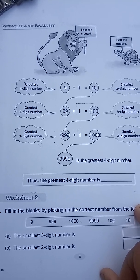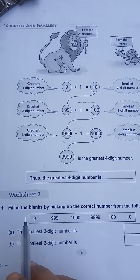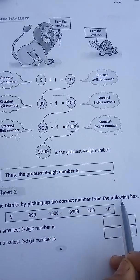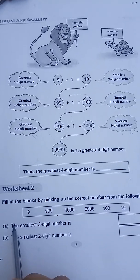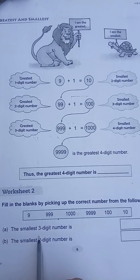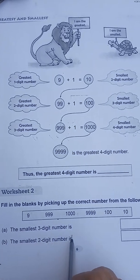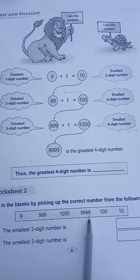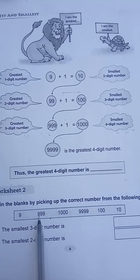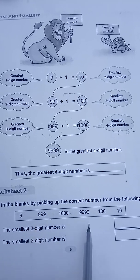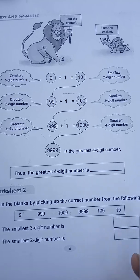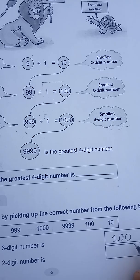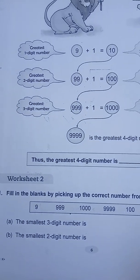Let's start with worksheet number two today. Fill in the blanks by picking up the correct number from the following box. The first one is: the smallest three-digit number. Which is the smallest three-digit number? This is the smallest — let's write 100 over here. The smallest three-digit number is 100.